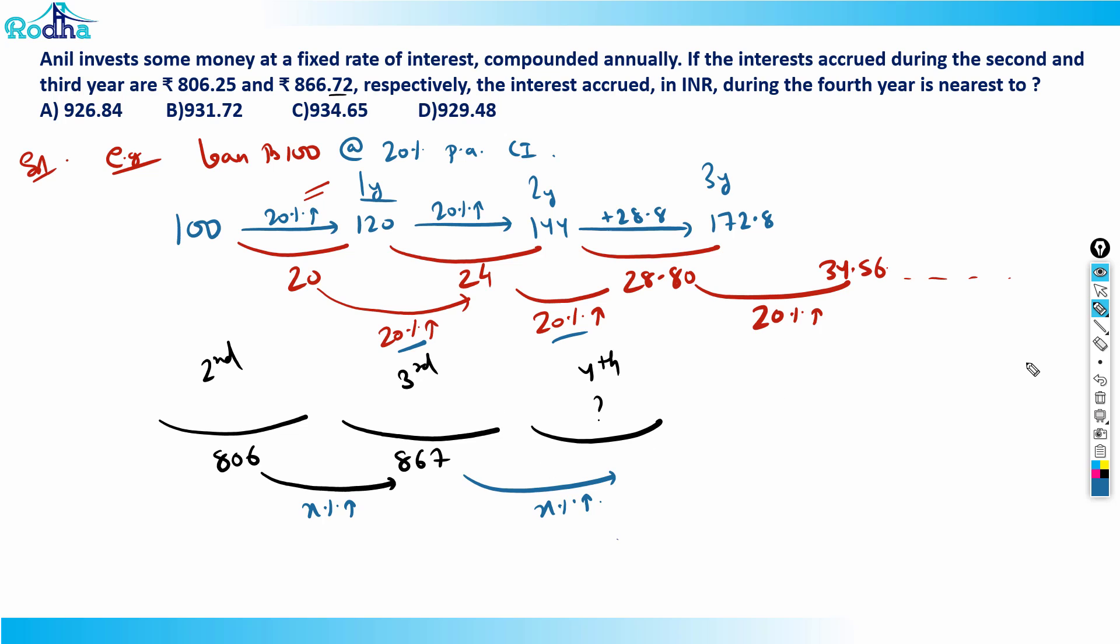Now what is that x%? You can calculate. In CAT you had a calculator, so it becomes very easy. You can just calculate what percentage increase. But in any non-calculator exam like IIFT, how should you solve it?